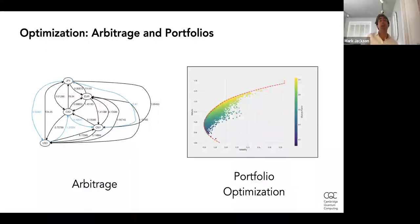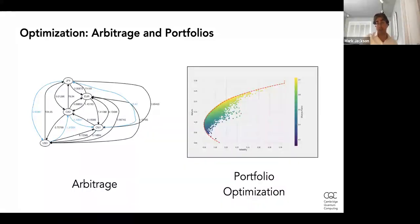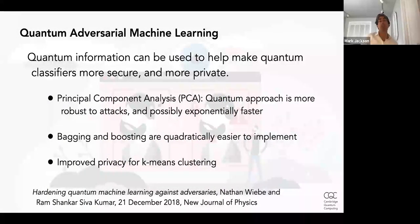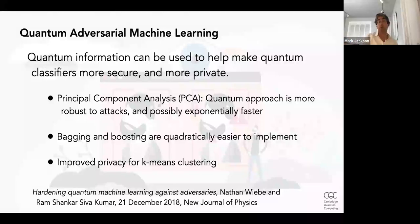Another application is portfolio optimization — minimizing risk across many different factors. The quantum algorithm is believed to be exponentially faster than classical approaches, and many financial companies are investigating whether this translates into real-world speed improvements. Finally, there's adversarial machine learning, a larger topic where you make machine learning routines battle each other so that they both get smarter.